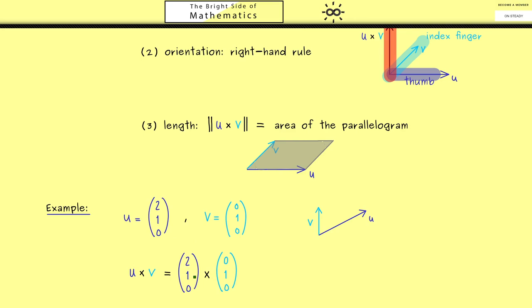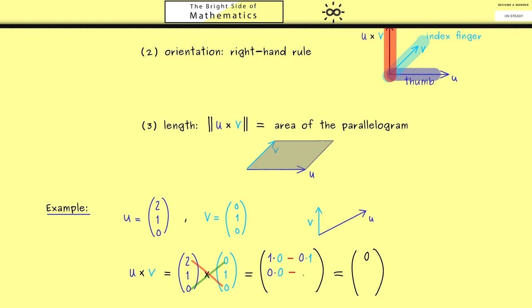Starting in the middle: the first component is 1 times 0, minus 0 times 1, which equals 0. For the second component, we combine 0 with 0 and subtract 2 times 0, so the second component is also 0. For the third component, we have 2 times 1 minus 1 times 0, which gives 2. So the cross product u cross v equals (0, 0, 2).